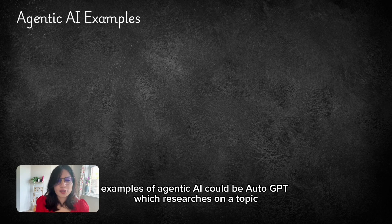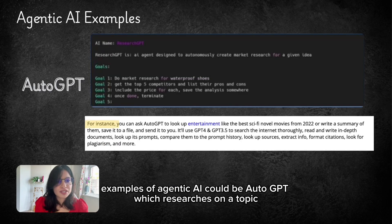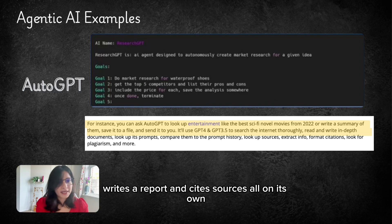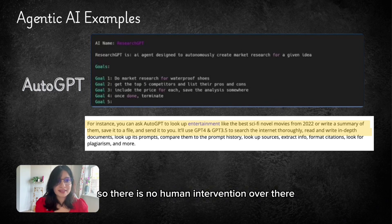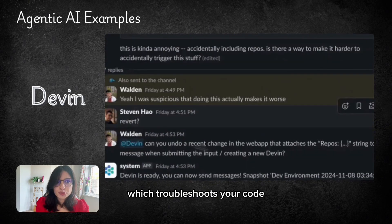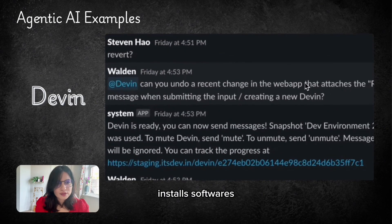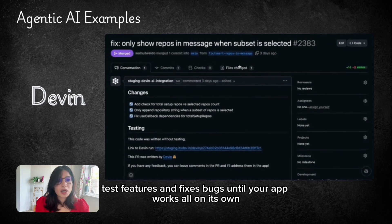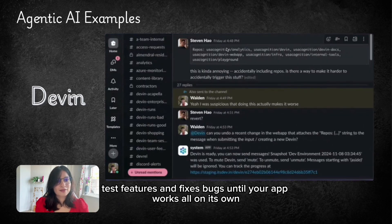Examples of Agentic AI could be AutoGPT which researches on a topic, writes a report and cites sources all on its own. So there is no human intervention over there. Then another example could be Devon which troubleshoots your code, installs softwares, test features and fixes bugs until your app works. All on its own.